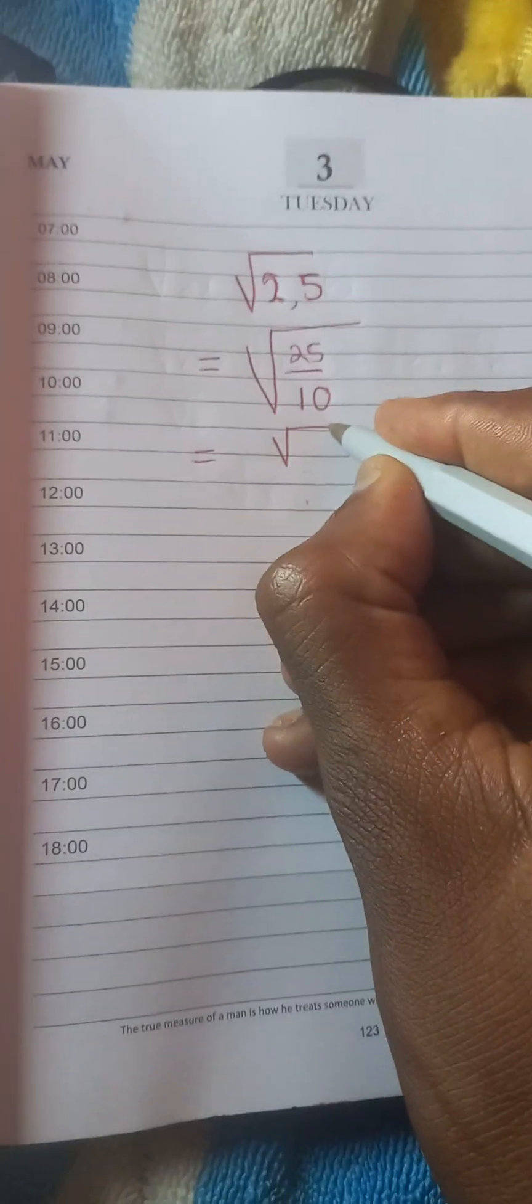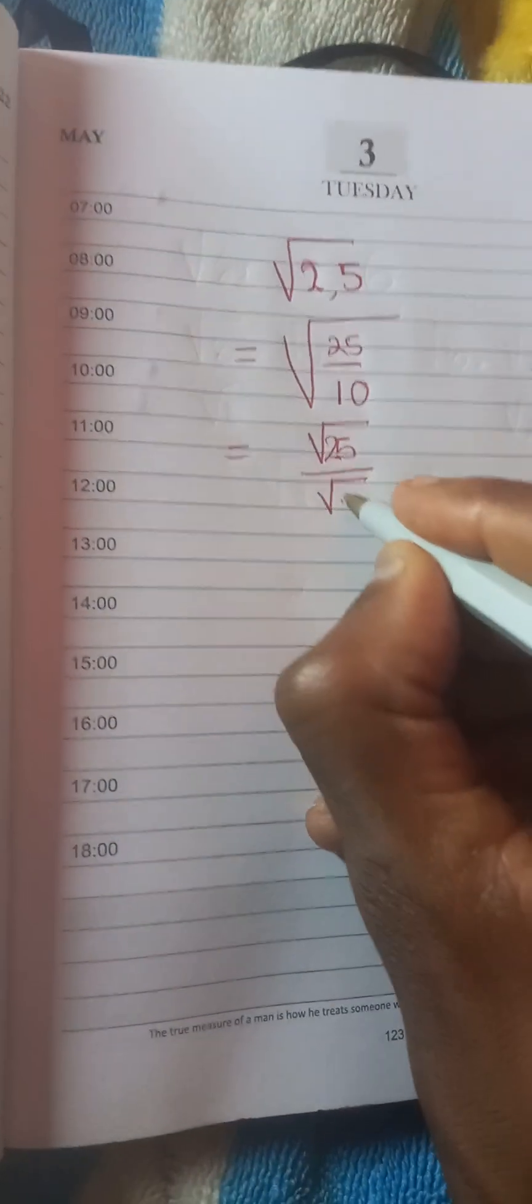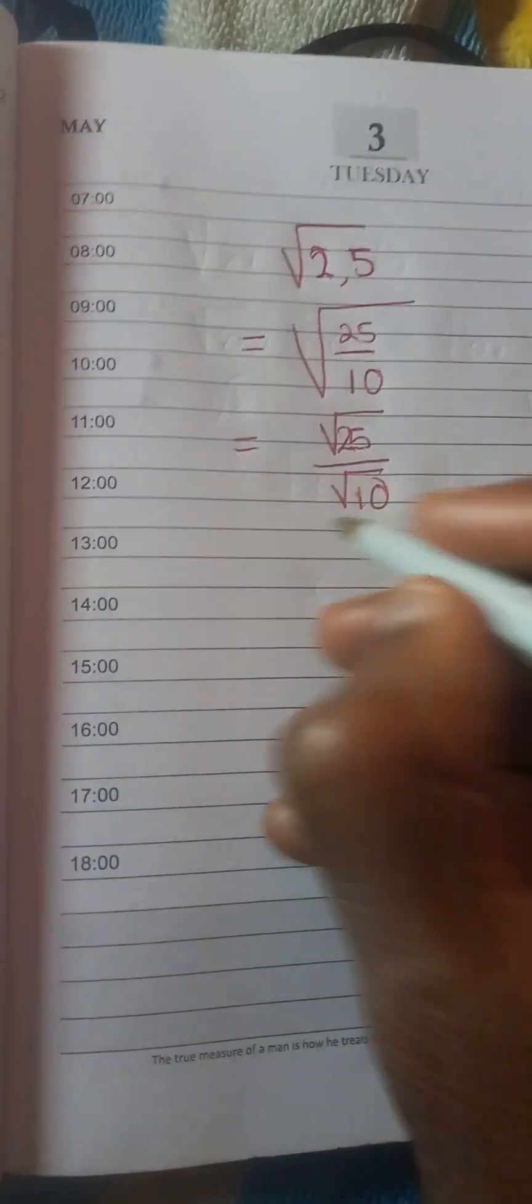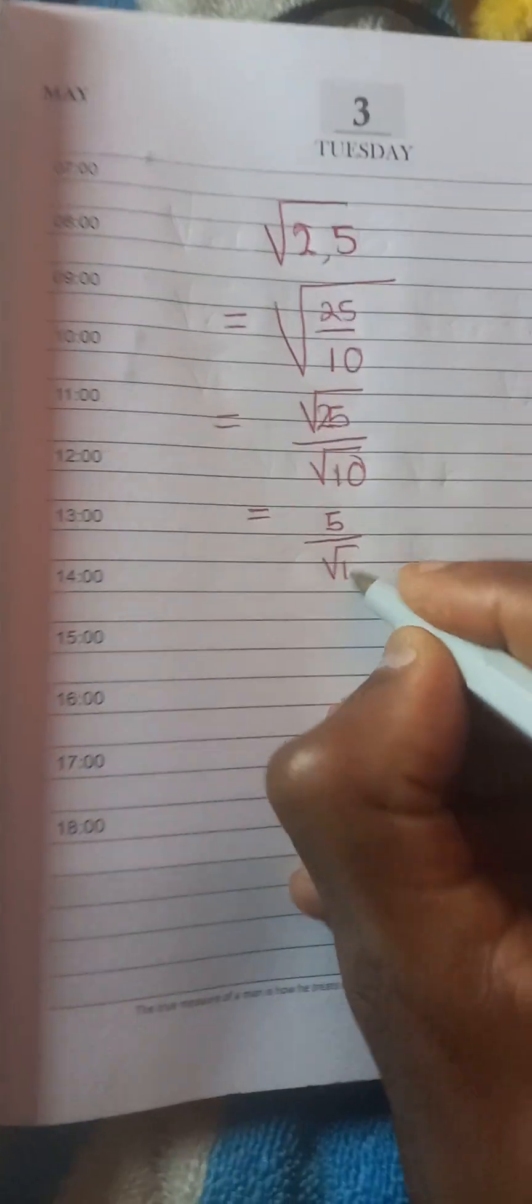Then this fraction is the same as square root of 25 over square root of 10. You see? So square root of 25 is 5 over square root of 10.